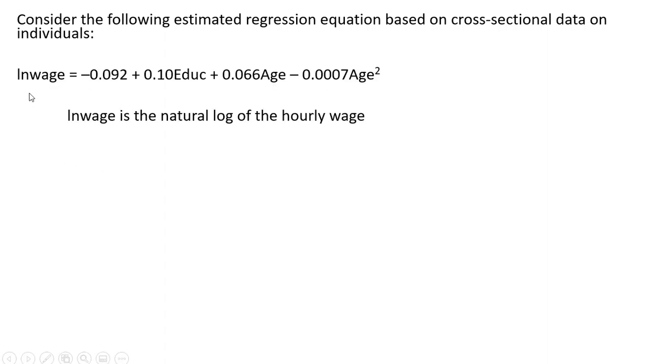Let's consider the following estimated regression equation based on cross-sectional data on individuals. Here's our regression results. The dependent variable, left-hand side variable, is the natural log of the hourly wage and is going to be a function of a person's years of schooling, education, and the person's age. Age here is entered as a quadratic to capture non-linearities between wage and a person's age.